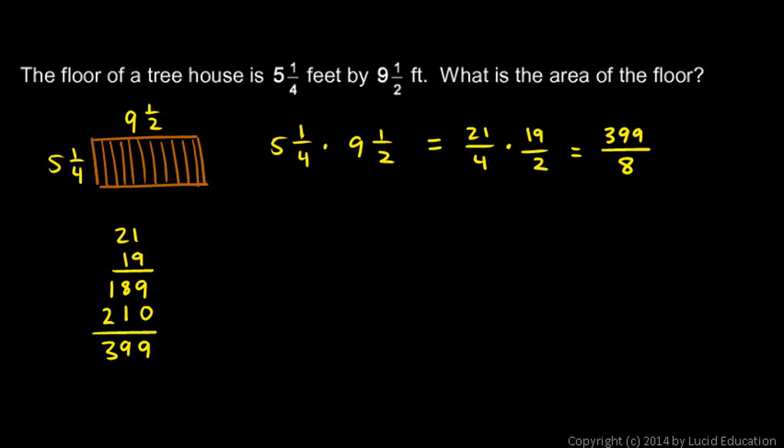And this is appropriate. Our original numbers were given as mixed numbers, so it's appropriate to give our answer as a mixed number. So we'll do this division right here. 399 divided by 8. Okay, 8 won't go into 3, but it will go into 39 four times. 4 times 8 is 32. We subtract, we get 7.